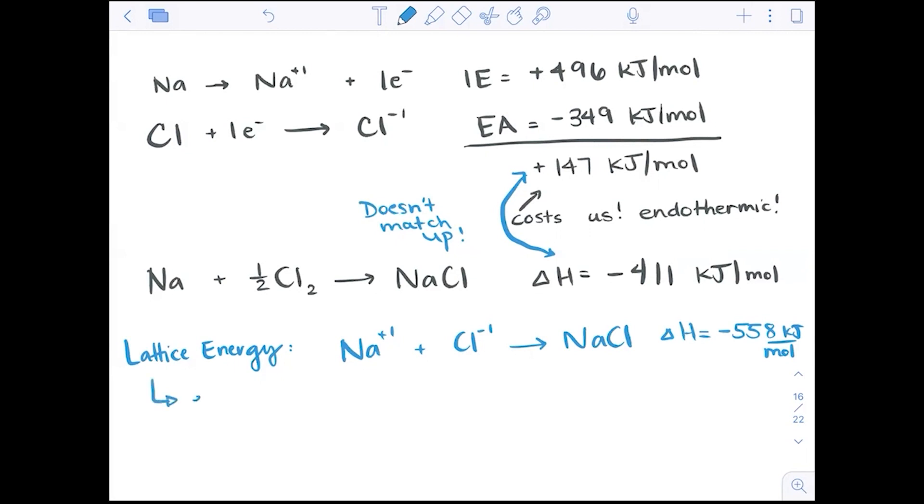Lattice energy is going to be defined as the energy released during the formation of the crystalline lattice. That means it's overall exothermic. Now, some textbooks will write lattice energy as a positive value because they are understood to be big and they're understood to be negative. And I see merit in putting it as a positive value so that we can say a larger lattice energy and not think a larger negative number. I'll keep it as a negative number and just make sure that we identify.